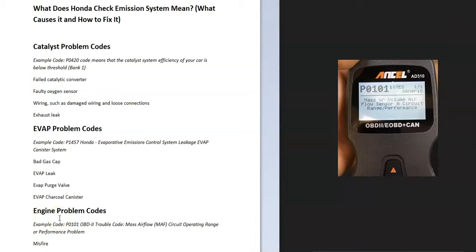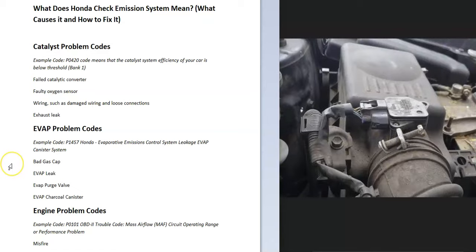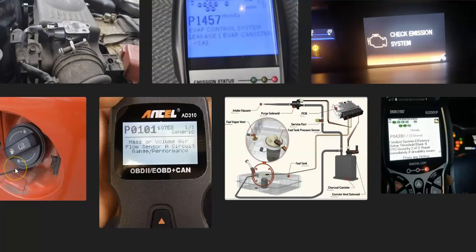If it's an engine problem, you'll get an engine-related code. For example, a P0101 code points toward a dirty or bad MAF sensor. Usually with a MAF sensor you just need to clean it up and it starts working again.